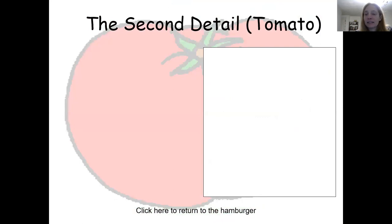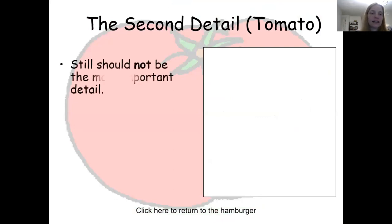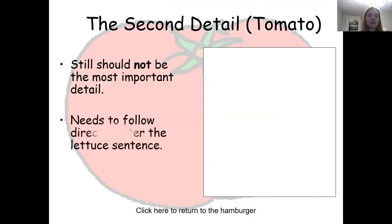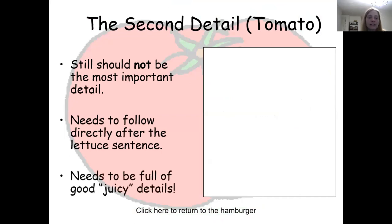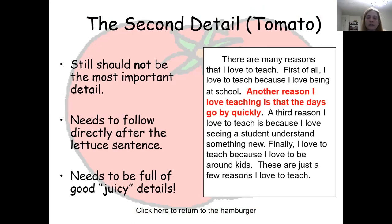The second detail is the tomato of our hamburger. This still should not be the most important detail if you're operating from least to most important. This is just another detail that follows right after the lettuce and it needs to be full of good juicy details. For example: 'Another reason I love teaching is that the days go by quickly.' Now I have two reasons — being at school and the days going by quickly. Those are two reasons why I love to teach.